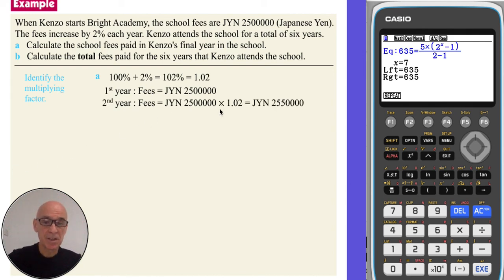So in the second year, multiplying that value by 1.02 gives an amount of 2,550,000 yen.